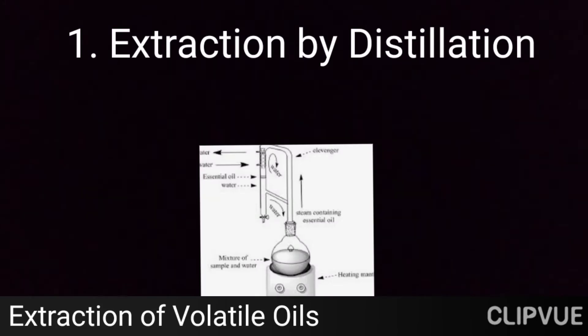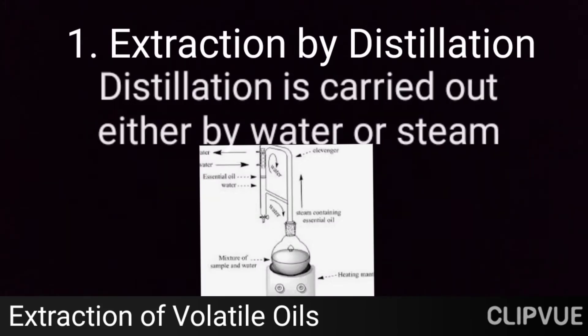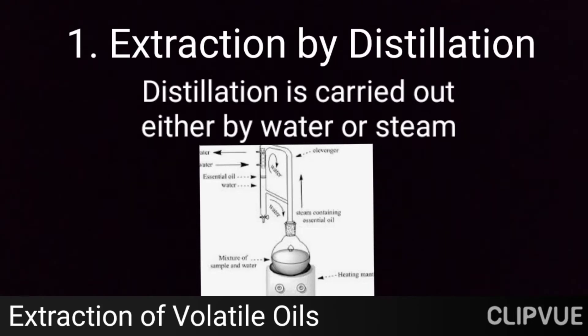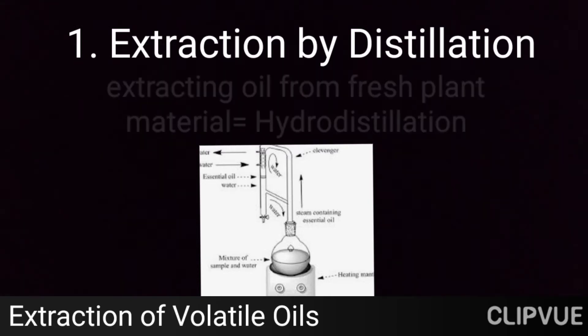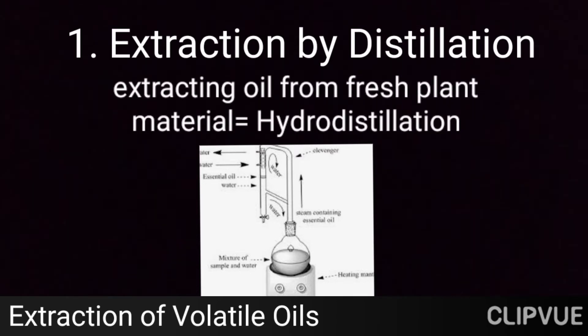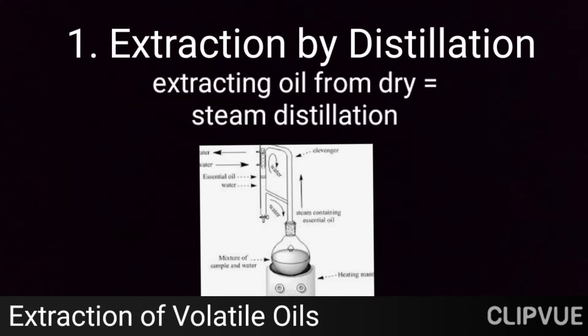The first method is extraction by distillation. In this method, distillation is carried out by either water or steam. When we are extracting the oil from fresh plant material or fresh flowers, we use hydro distillation. When we are extracting from dry plant material, we use steam distillation, where vapor is used.